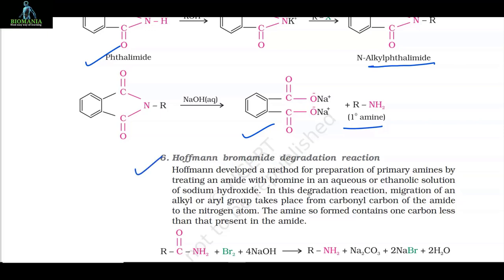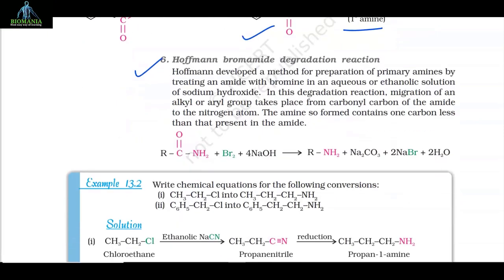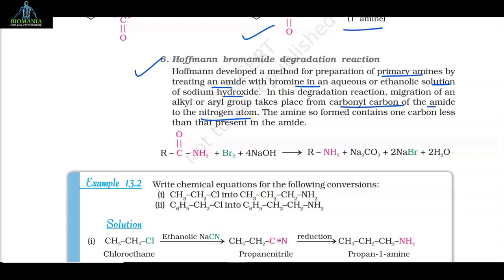Method 6: Hoffmann bromamide degradation reaction. Hoffmann developed a method for preparation of primary amines by treating an amide with bromine in an aqueous or ethanolic solution of sodium hydroxide. In this degradation reaction, migration of an alkyl or aryl group takes place from the carbonyl carbon of the amide to the nitrogen atom. The amine so formed contains one carbon less than that present in the amide: RCONH2 + Br2 + 4NaOH → RNH2 + Na2CO3 + 2NaBr + 2H2O.